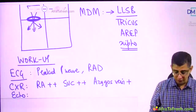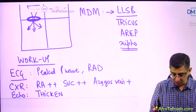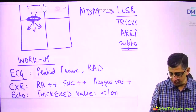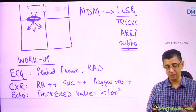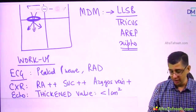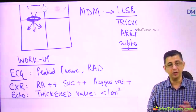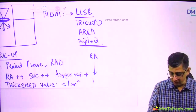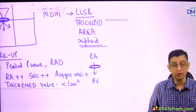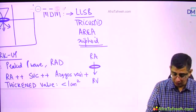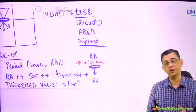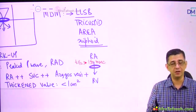Echocardiography confirms the diagnosis, revealing a thickened tricuspid valve. Severe tricuspid stenosis is defined as a valve orifice less than 1 square centimeter — compared to mitral stenosis where severe is less than 1.5 sq cm and very severe is less than 1 sq cm. Additionally, the time taken for blood to travel from the right atria to right ventricle is increased due to the narrowed opening. On echocardiography, severe tricuspid stenosis is defined as this pressure half-time being more than 190 milliseconds.